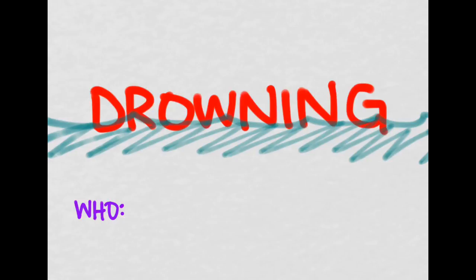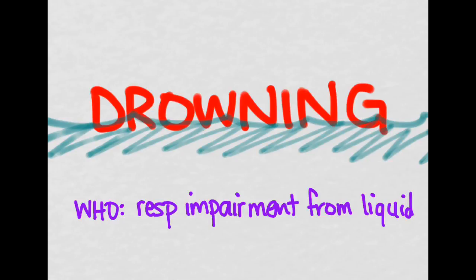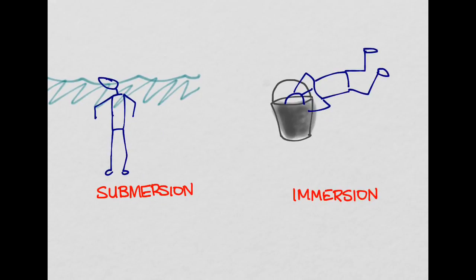The World Health Organization categorizes drowning as respiratory impairment from either submersion or immersion in some sort of liquid. Submersion refers to whenever the airway goes below the surface of the liquid. Immersion is when water gets onto the face, such as when you've got your head in a bucket. Submersion tends to be drowning in pools or bodies of water, whereas immersion can happen in buckets or even toilets.